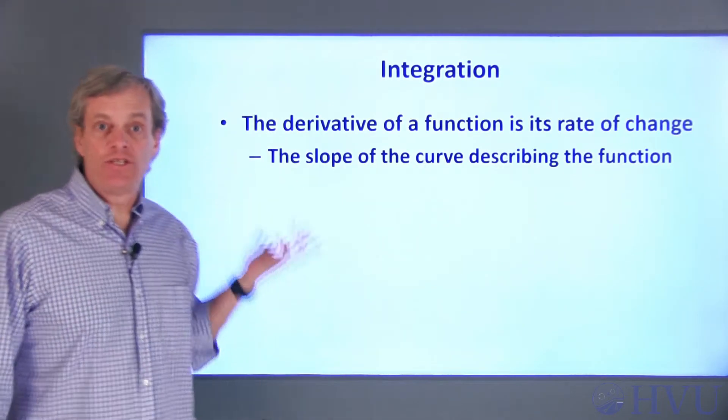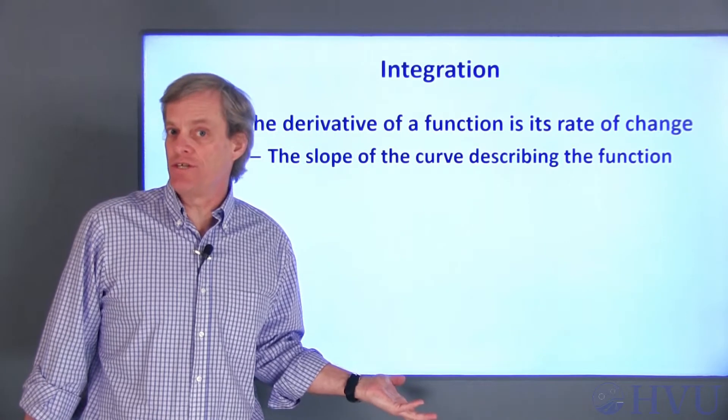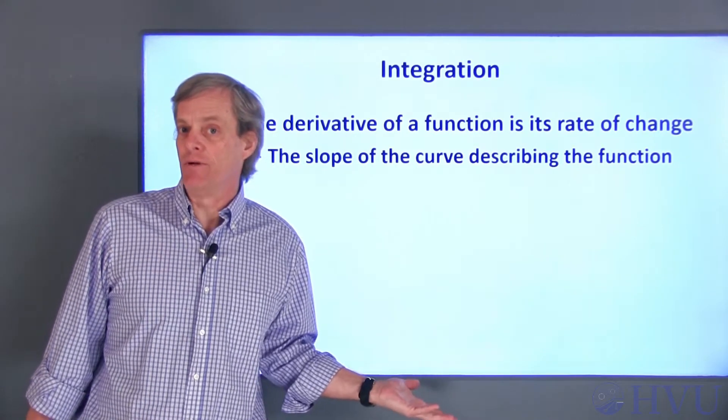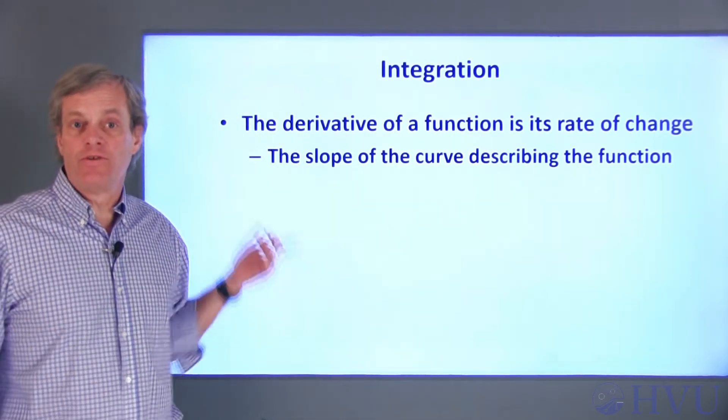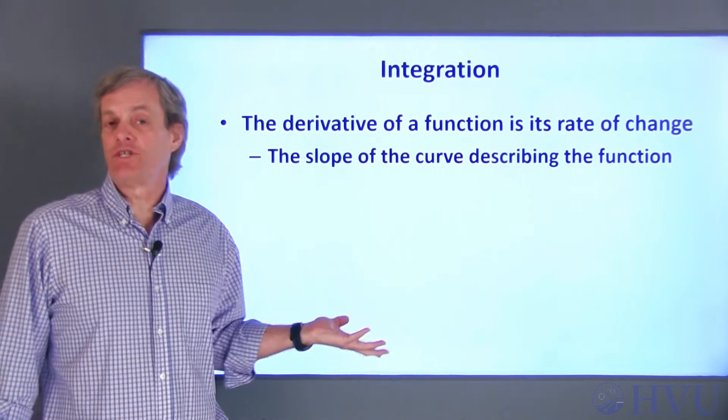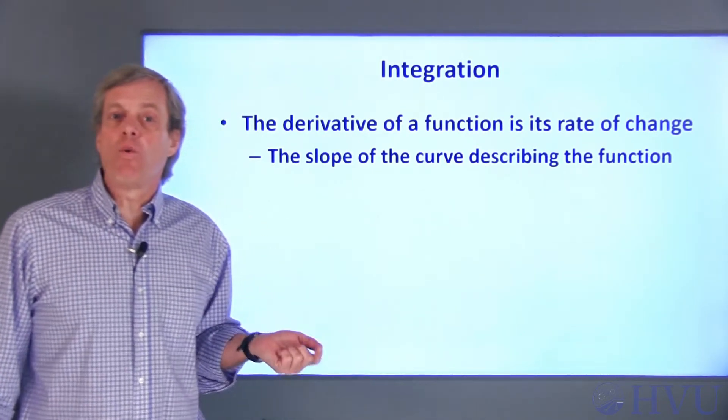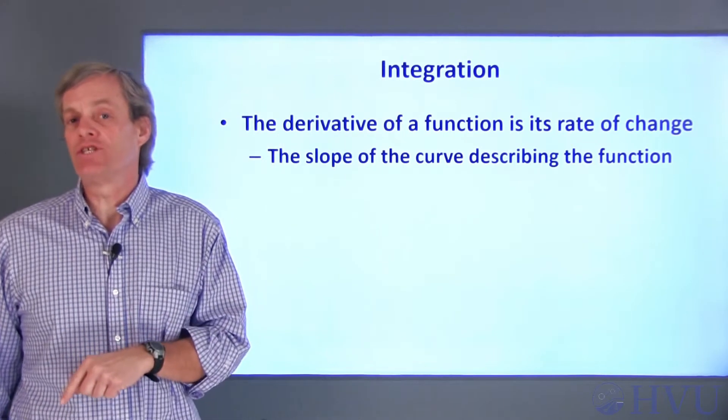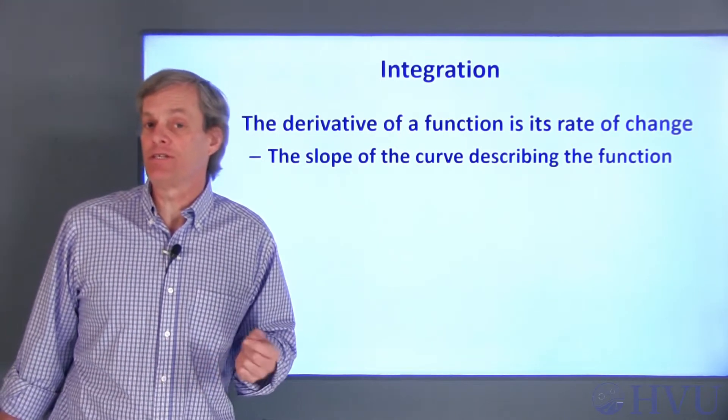The derivative of a function is just the rate at which the function changes with respect to its independent variable. If you plot the function, the derivative will be the slope of the function at any point. The equation for the derivative of a function is always tangent to the curve representing the function itself.